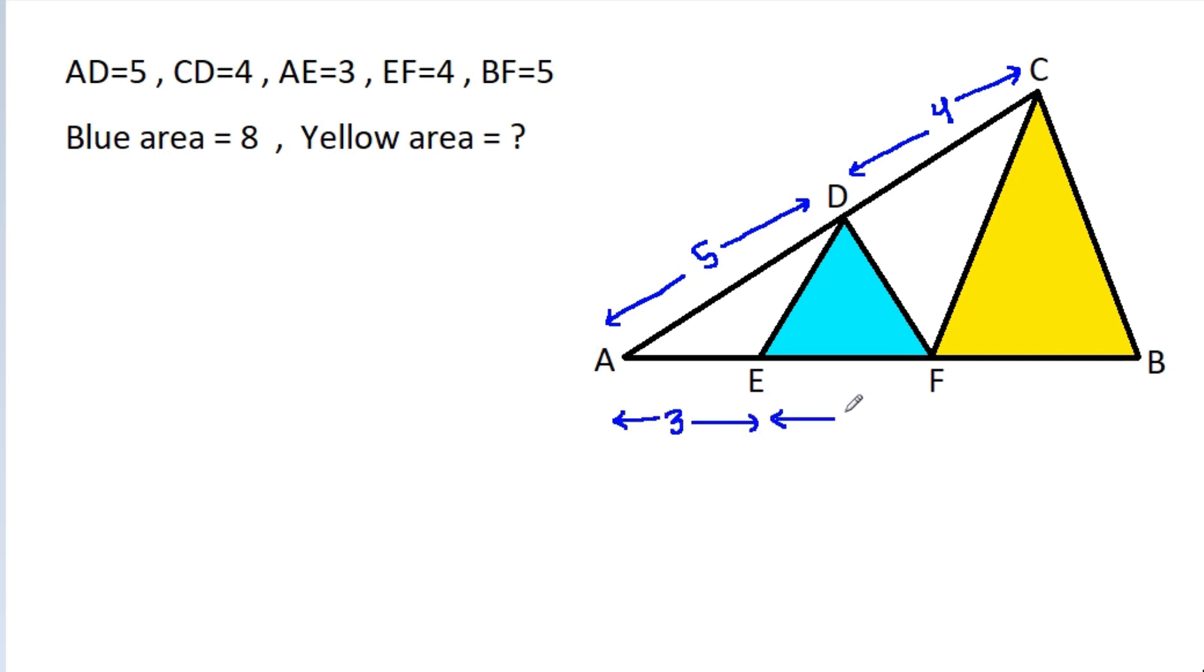EF is 4 and BF is 5. The blue area is 8, then we have to find the yellow area.